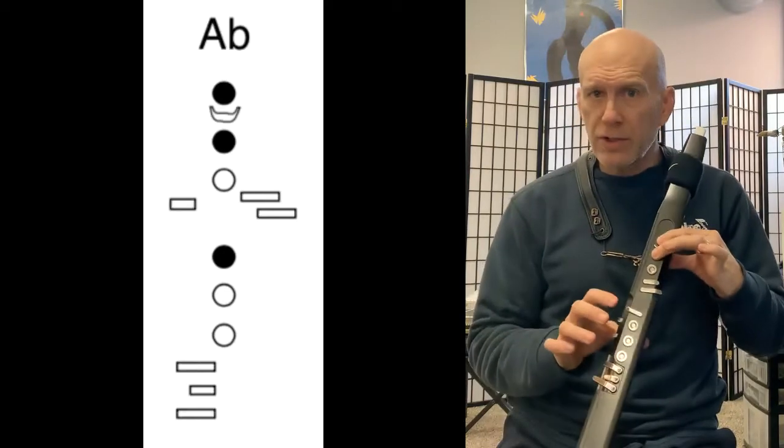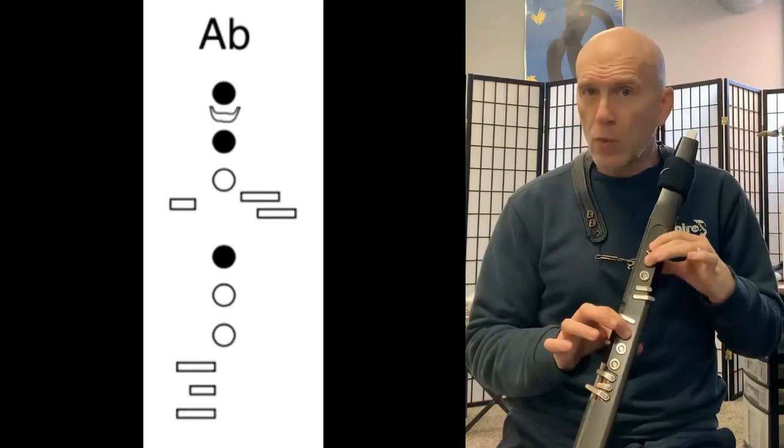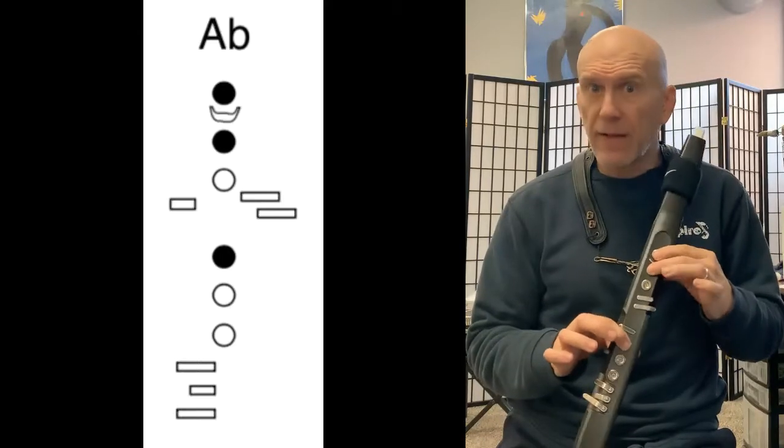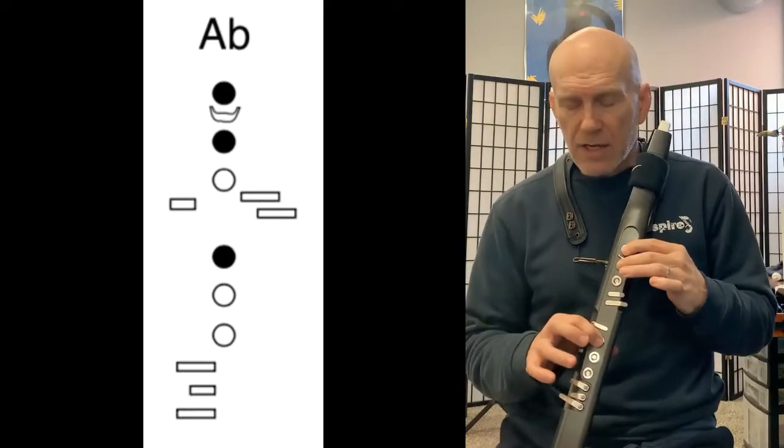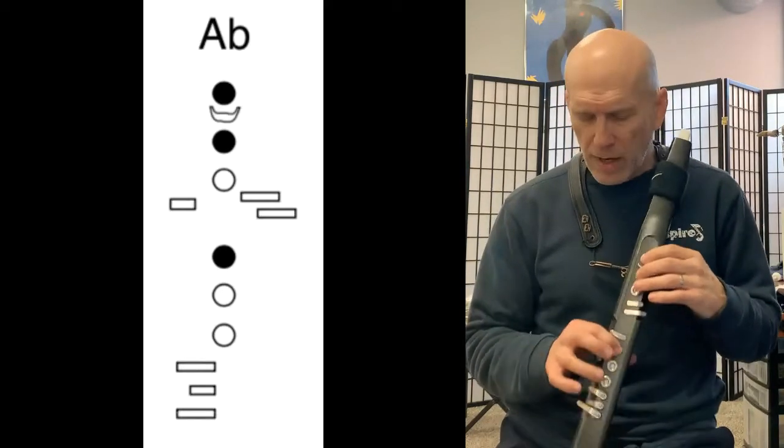We're going to use one and two in our left hand and one in our right hand. And that's going to be A flat. So I'm going to talk you through the E flat scale because we're going to use an alternate C as well.